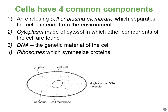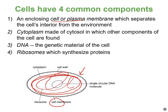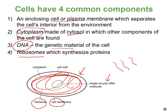Regardless of the type of organism, all cells have four basic components in common. First, all cells have some kind of cell or plasma membrane that protects the interior from the environment. Inside the cell, everything — known as the cytoplasm — includes all the structures inside the cell and the liquid portion, which is known as the cytosol. All cells also have some kind of genetic material or DNA, and finally, all cells have ribosomes, which are a type of organelle that makes proteins.